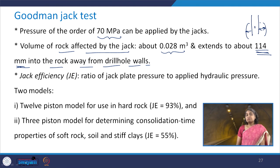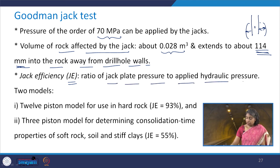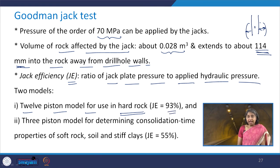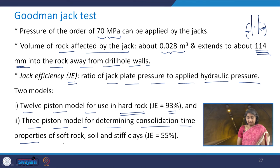Jack efficiency is the ratio of jack plate pressure to applied hydraulic pressure. There are two models: the 12-piston model used in hard rock, which has a jack efficiency of 93%, and the 3-piston model for determining consolidation time properties in soft rock, soil, or stiff clays.